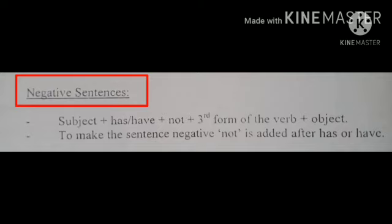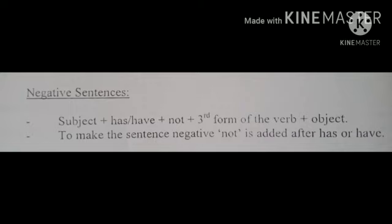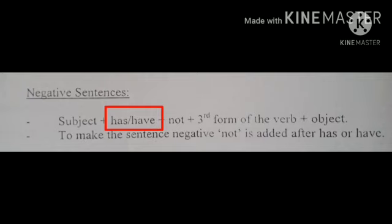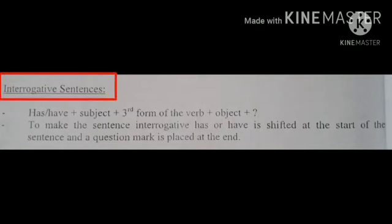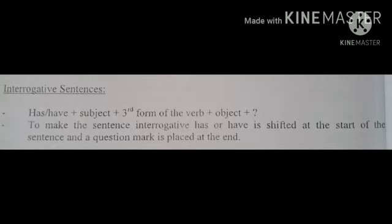Negative Sentences (منفی جملے) Formula: Subject + has/have + not + third form of the verb + object. To make the sentence negative, 'not' is added after has or have. Negative Sentences بنانے کے لیے helping verb has اور have کے ساتھ not add کر کے منفی جملے بنائے جاتے ہیں۔